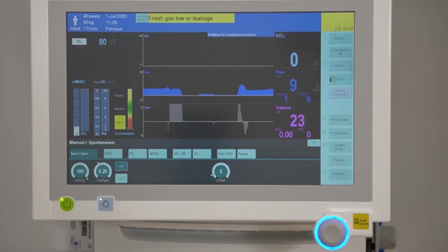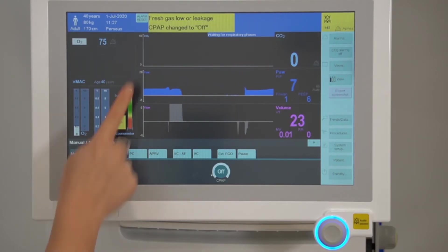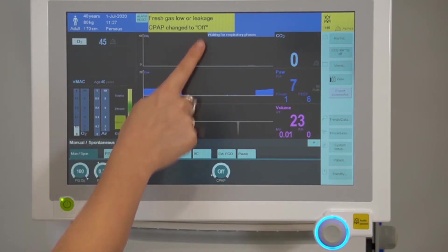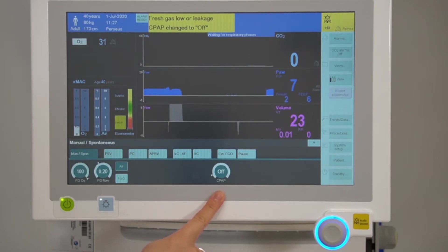If a leak in the seal is sensed, the CPAP will automatically change to off. Just revert to your APL valve as per normal practice.